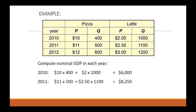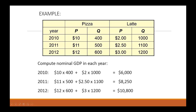If we were calculating nominal GDP in each year: in 2010, we get the value of pizza by taking the quantity of pizzas times the price of a pizza, and adding to it the quantity of lattes times the price of lattes. In 2011, we do the same thing using that year's prices and quantities. The total value of GDP in 2011 is just over $8,000, while in 2010 the total value was only $6,000.